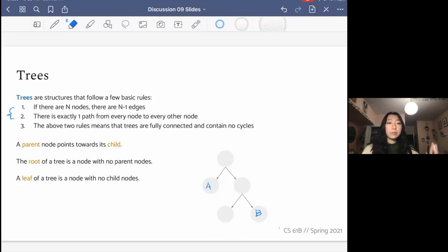A parent node points towards its child. So here, for example, if this node was C, C is the parent and A is the child. The root of a tree is a node with no parent nodes. So in this example, C is the root. And a leaf of a tree is a node with no child nodes. So in this example, B is a leaf. And that's our vocab for trees.